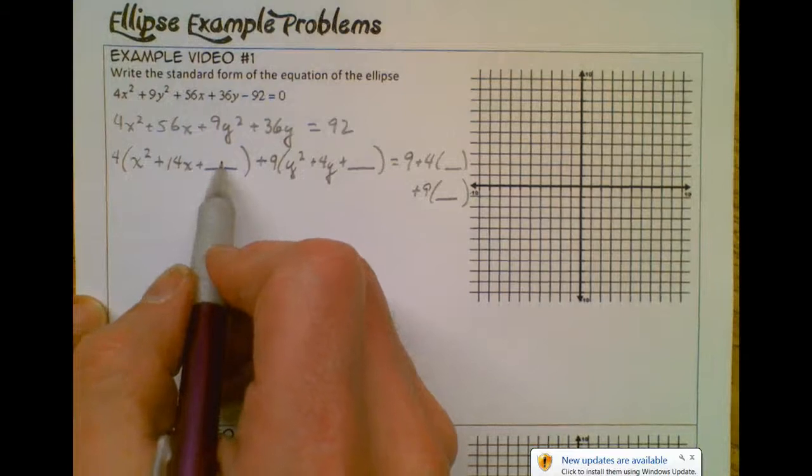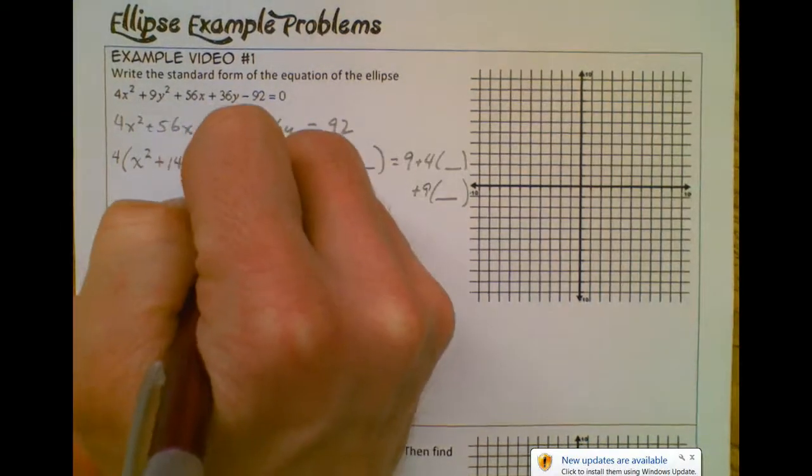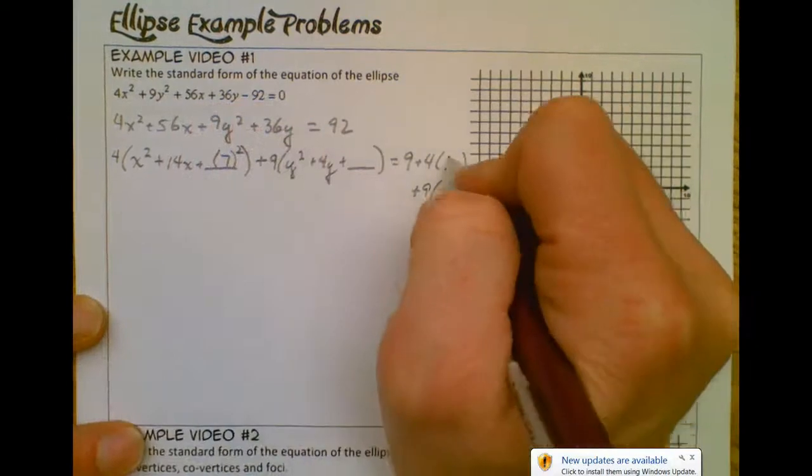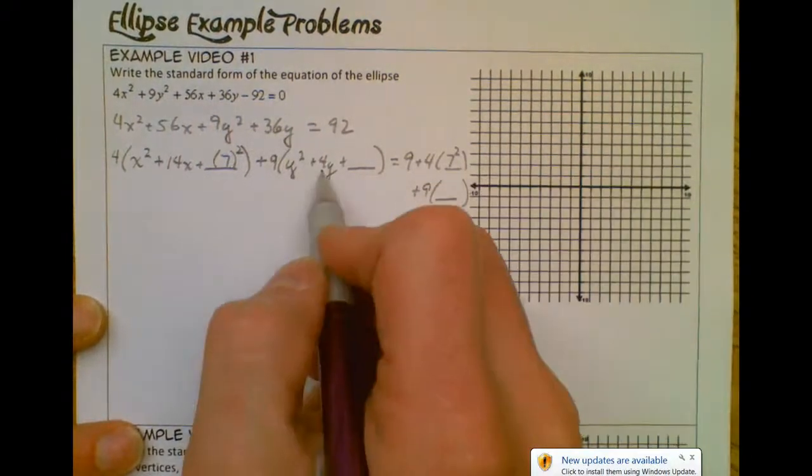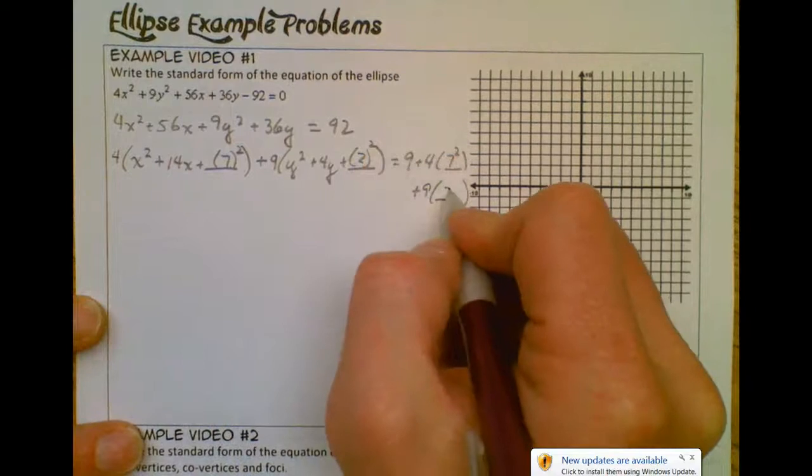Alright, so to figure out what goes here to complete the square, I'm going to take half of my x term. So that's going to be 7 and square it. So this is going to be a 7 squared. Take half of 4, so that's 2, and square it. So this is a 2 squared.